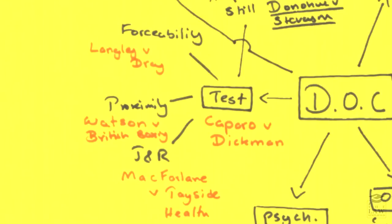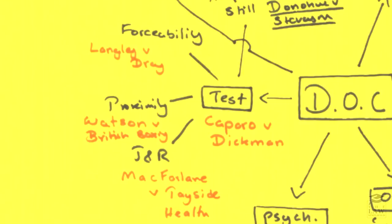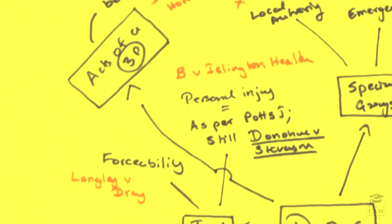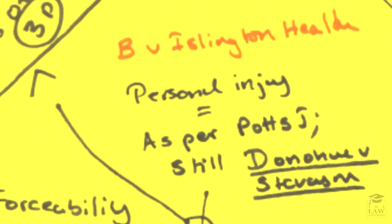Each part has a particular case that goes along with it. For instance, foreseeability, you can look at Langley v Dray; proximity, Watson v British Boxing; and just and reasonableness, you can have a look at McFarlane v Tayside Health. Whereas this goes to sort of showcase the contemporary viewpoint, Potts J, as in Justice Potts, in B v Islington Health concluded that personal injury still has the test stated in Donoghue v Stevenson, the seminal case of the decomposed snail in the ginger beer bottle.